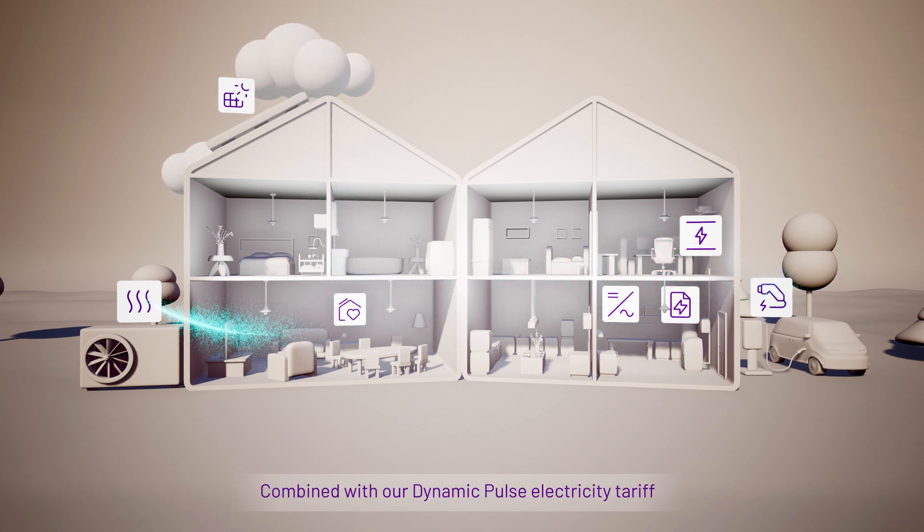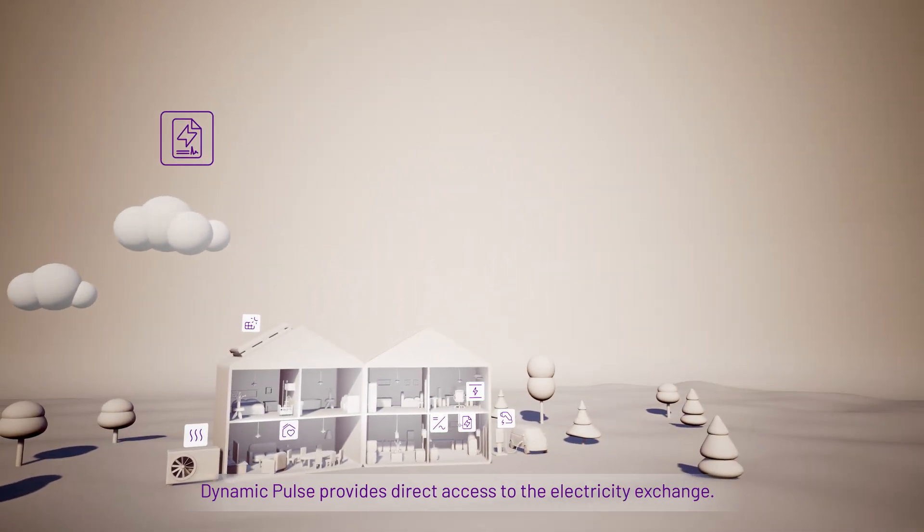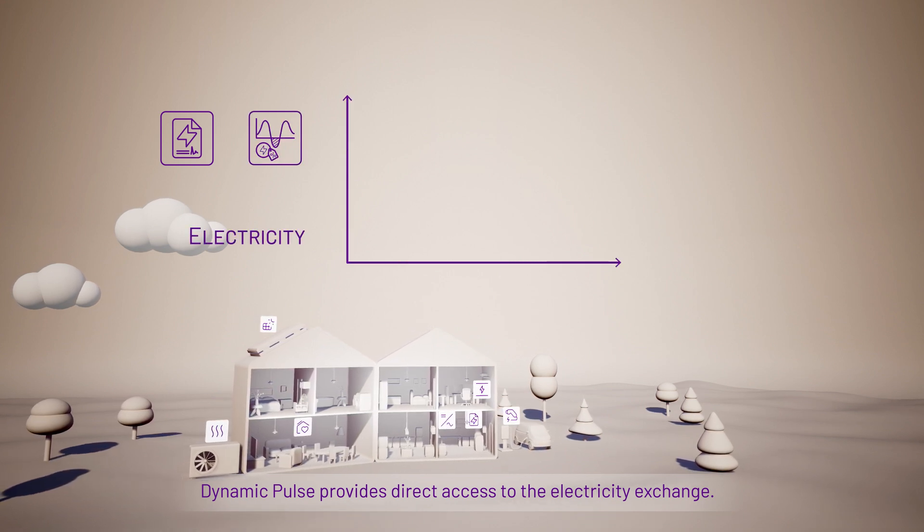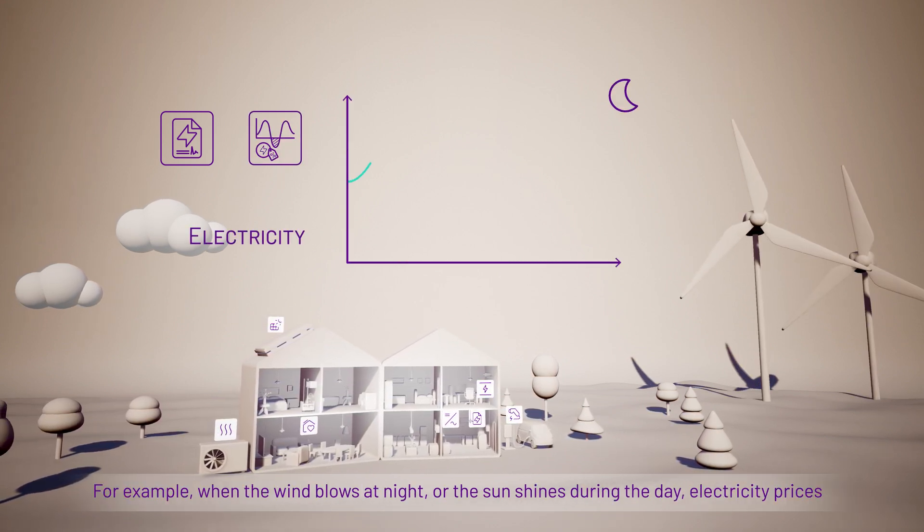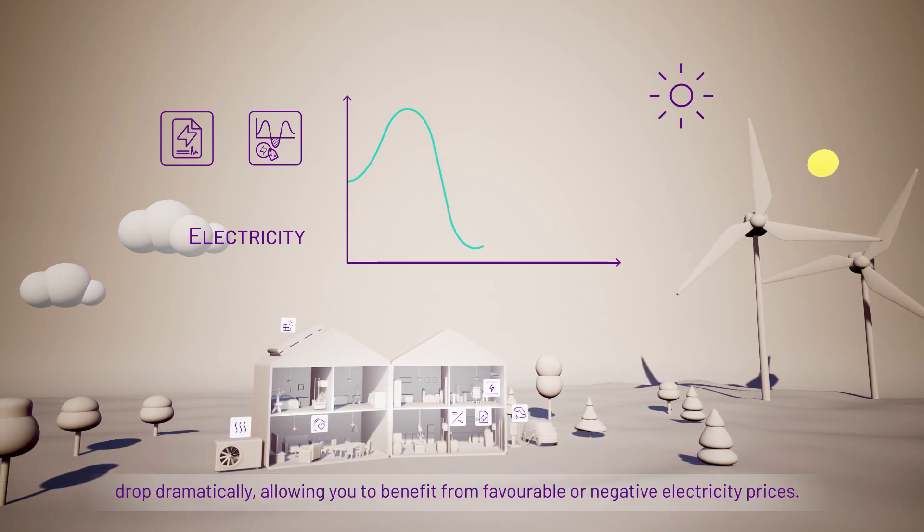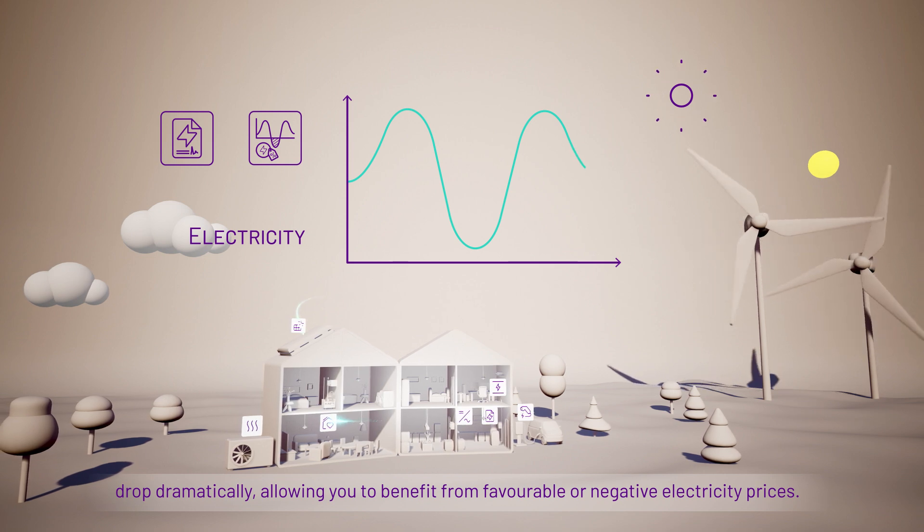Combined with our Dynamic Pulse electricity tariff and energy trader, you can enjoy significant financial benefits. Dynamic Pulse provides direct access to the electricity exchange. For example, when the wind blows at night or the sun shines during the day, electricity prices drop dramatically, allowing you to benefit from favourable or negative electricity prices.